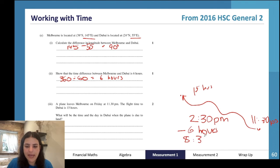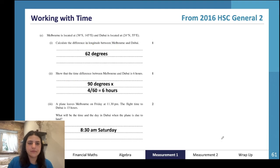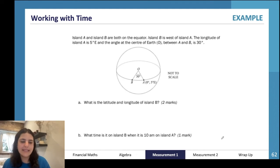Here's another example. Island A and Island B are both on the equator. Island B is west of Island A. The longitude of Island A is 5° East, and the angle at the center of the earth O between A and B is 30°. You can see that it's drawn out as this little triangle or trigonometry problem for us.